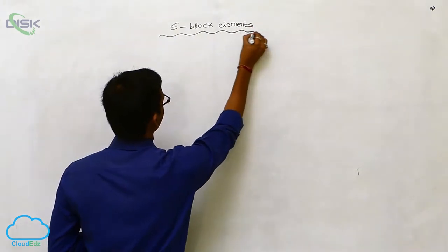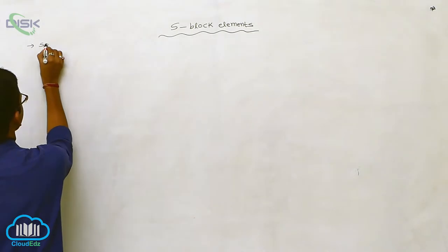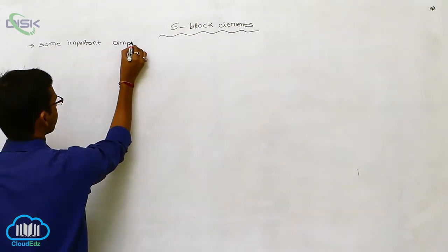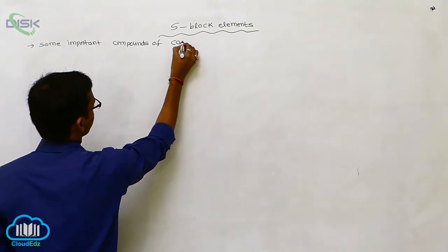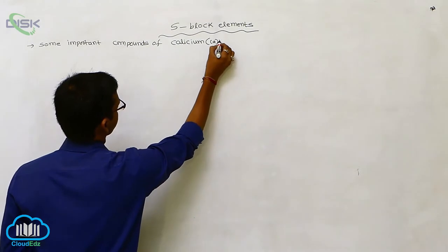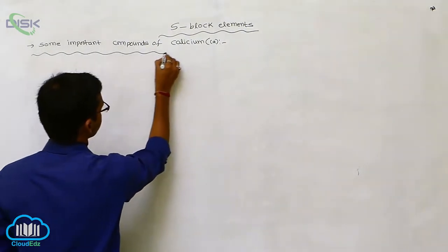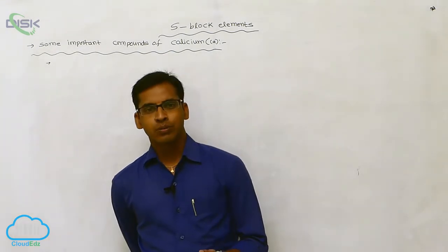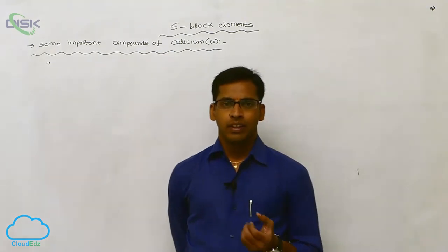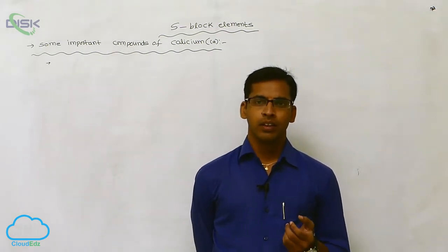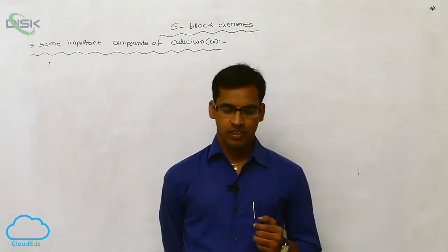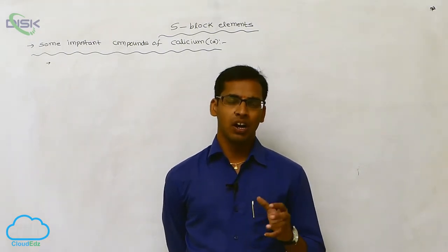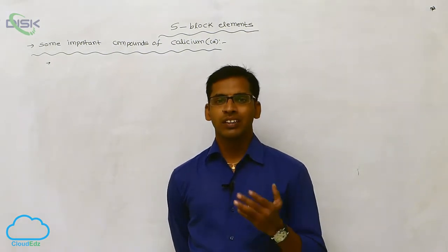In the secondary group elements, we look at some important compounds of calcium. Calcium forms important compounds like calcium chloride, calcium oxide, calcium hydroxide, calcium carbonate, calcium sulfate, and cement. These are prepared on a large scale in laboratories or industries, and their uses are what we will discuss today.